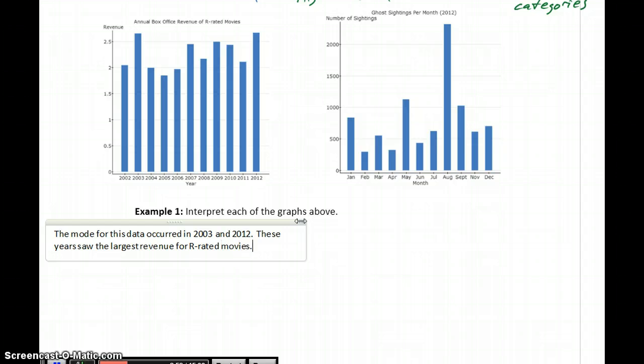These years saw the largest revenue for R-rated movies. So when we identify those two categories as the mode, that's what it means. Those are the years that, in this case, the most revenue was earned.